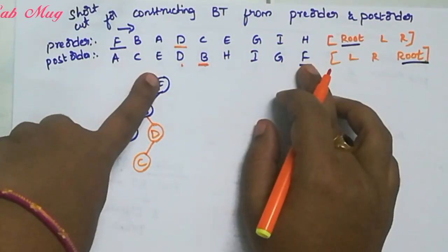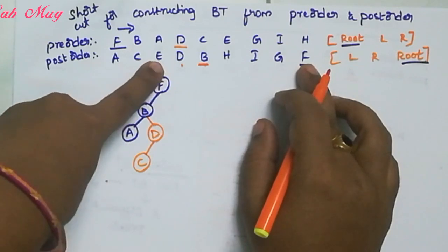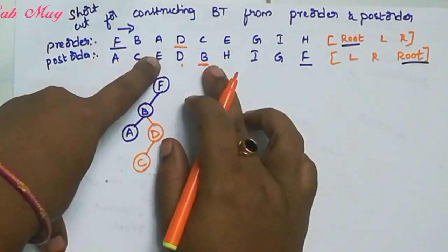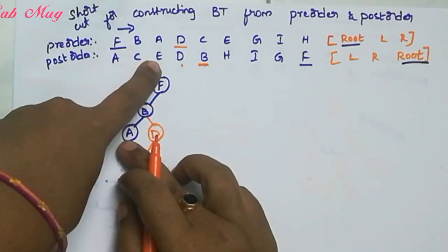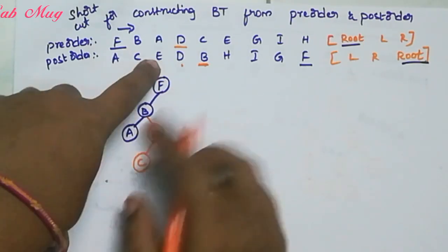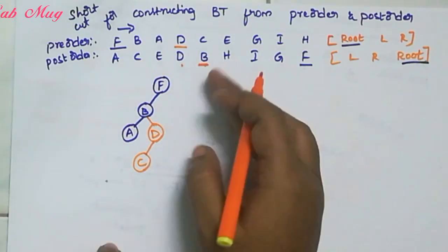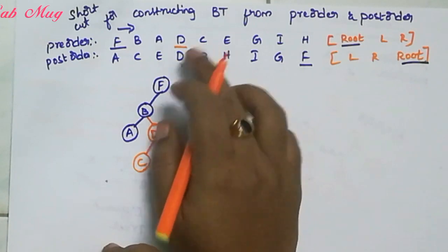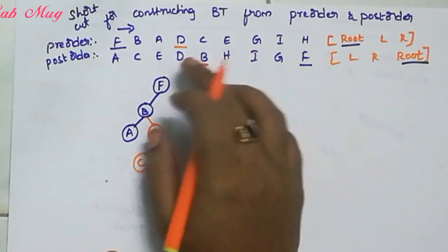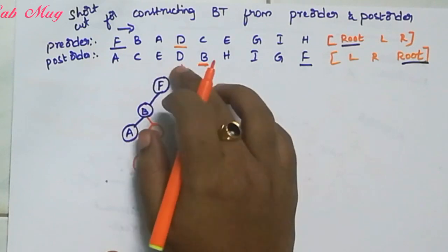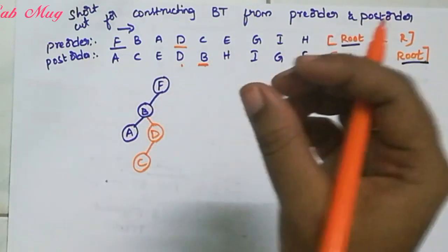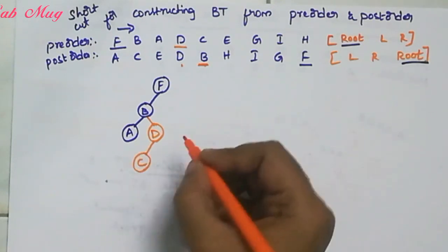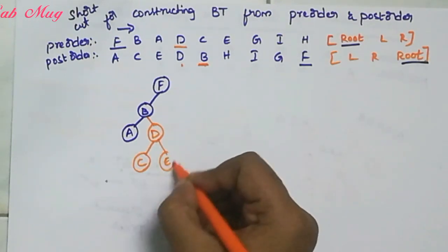Next element is E. F is the left element. The root element is B, B is the left element. Then A - A is the right element, so A is the root element. Then D - D is the root element. C is already allotted to the left part. So E is allotted to the right part of D.